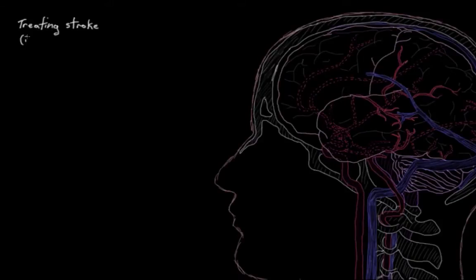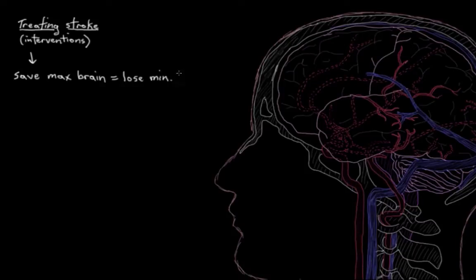The main underlying goal of stroke treatment is to save as much brain tissue as possible. By saving the maximum amount of brain tissue, we only lose a minimal amount of bodily function—movement, vision, sensation, taste, and so on.